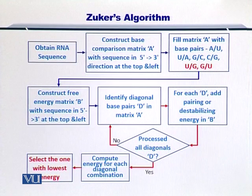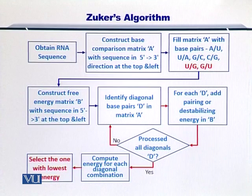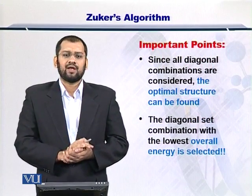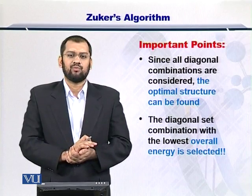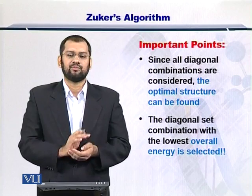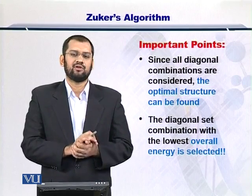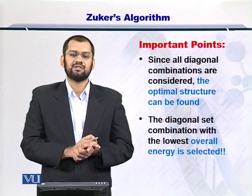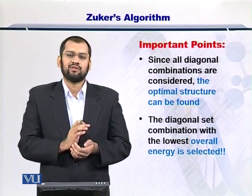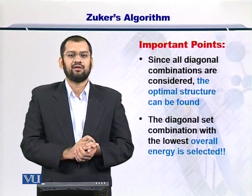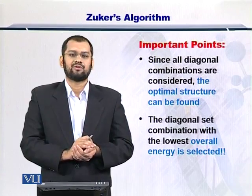This may contain one, two, three, four, or many diagonals depending on the stability energy involved in the formation of those diagonals in matrix A. The important point to remember is that since all diagonals are formed as the result of bond formation between nucleotides, you have to consider every possible diagonal and create combinations of different diagonals in order to arrive at the best combination. Once you have done that, you can select the overall lowest energy set of diagonals, which is the optimal structure for the RNA.